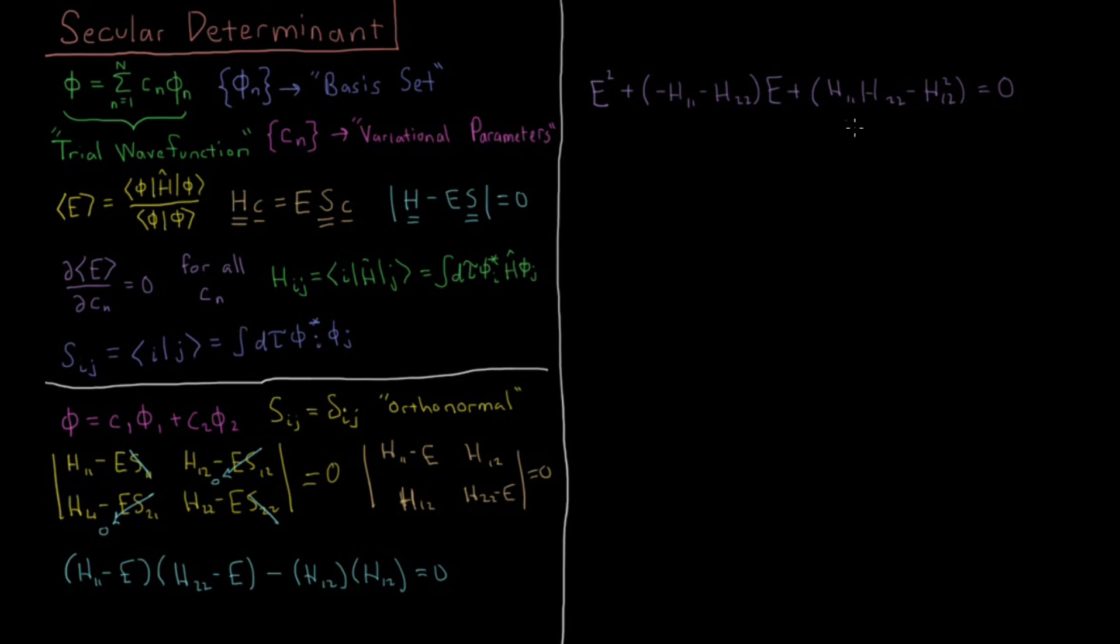So now we have a quadratic equation for E. We have something in the form ax² + bx + c = 0. So now we can use the quadratic formula to try to get the two values of what E is going to be in this basis set. This basis set has two basis functions, so it's going to give us two energy eigenvalues, and the lowest one will be the ground state eigenvalue, the ground state energy.